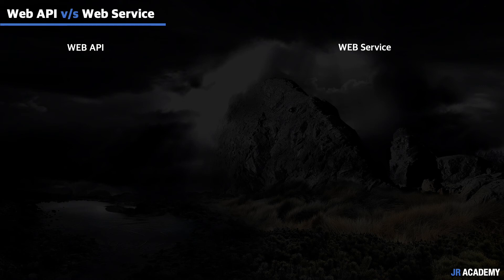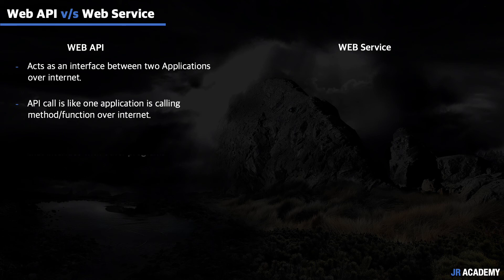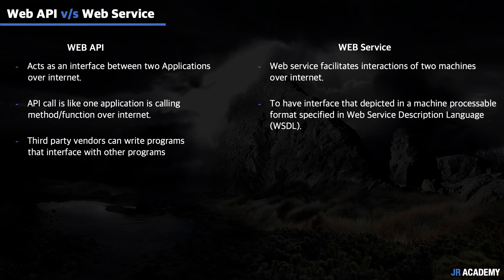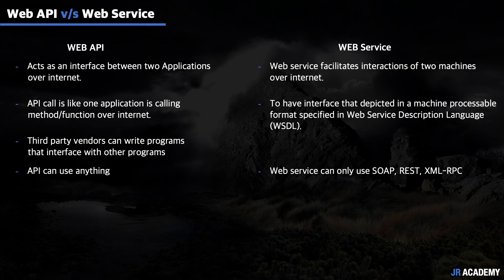There are very small differences here. An API acts as an interface between two applications over the internet — meaning an API call is like one application calling a method or function over the internet. Additionally, third-party vendors can write programs that interface with other programs. Whereas a web service facilitates interaction of two machines over the internet — it is designed to have an interface depicted in a machine-processable format specified in Web Service Description Language, or WSDL. A web service can only use SOAP, REST, or XML-RPC, whereas an API can use anything. That is why an API is considered lightweight and a web service is considered heavyweight.